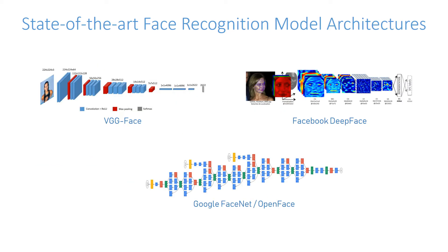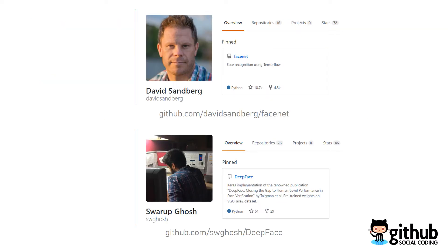Herein, all researchers shared the network structures publicly. However, from the academic perspective, research prefers to share pre-trained weights, whereas from the commercial perspective, ones prefer not to share pre-trained weights. Gratefully, the open source community retrained the models whose pre-trained weights hadn't been shared, and then shared those pre-trained weights to the public.